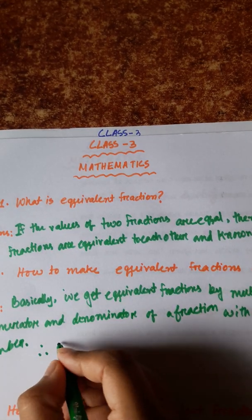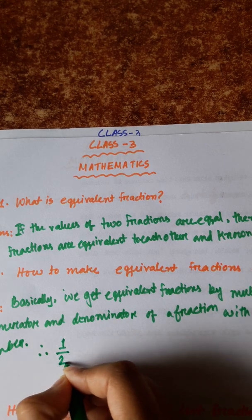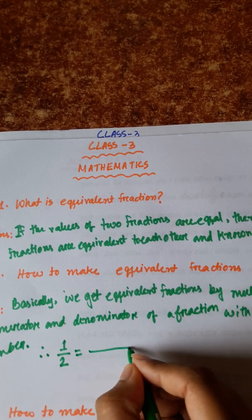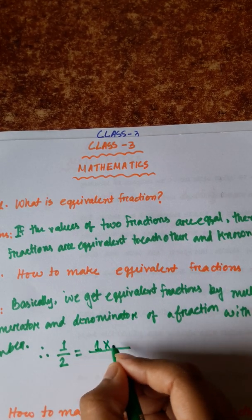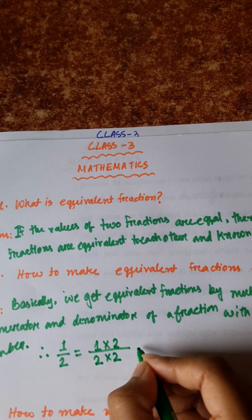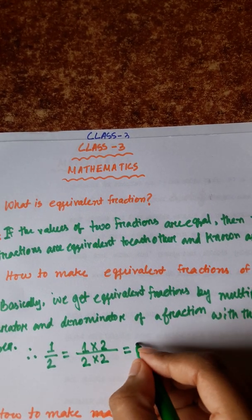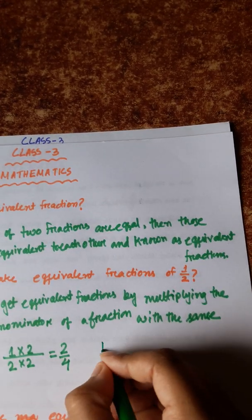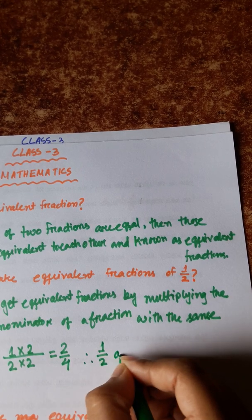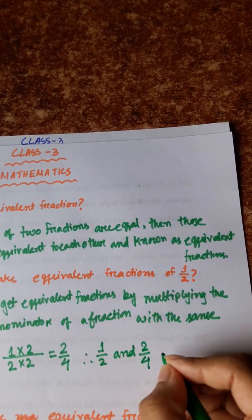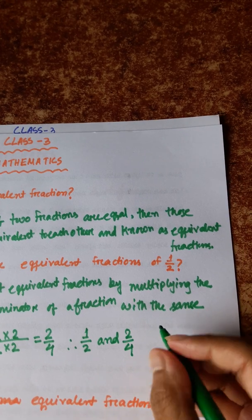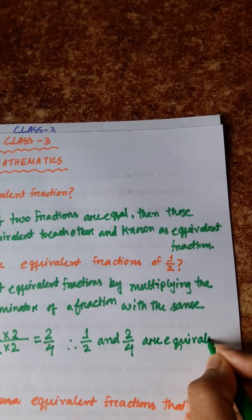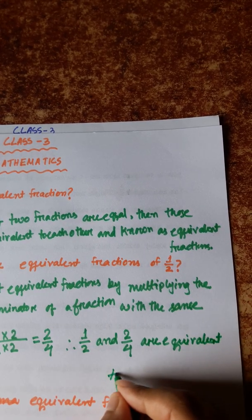For example, to find equivalent fractions of 1/2, we multiply by 2: 1×2 over 2×2 gives us 2/4. So 1/2 and 2/4 are equivalent to each other.